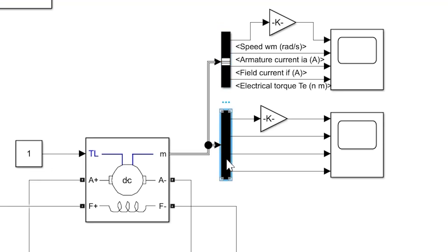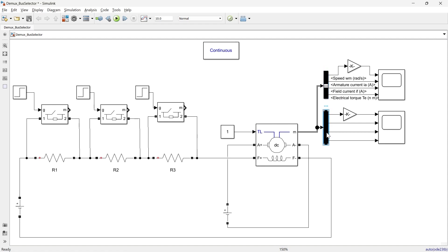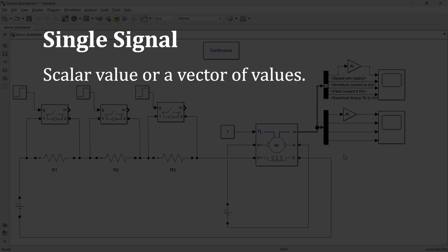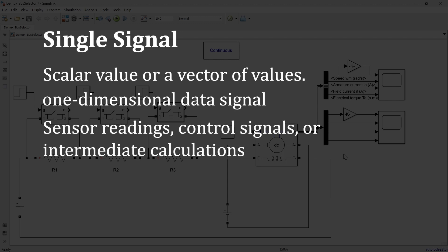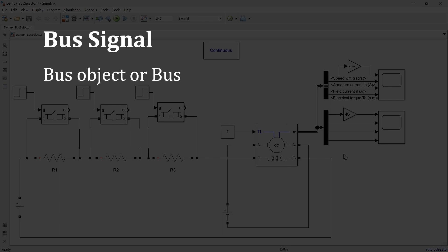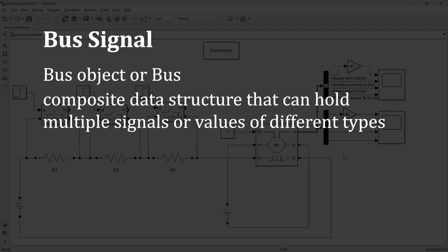The DMUX block accepts a single signal or a bus signal — here we are giving it a composite or bus signal. Whereas the bus selector accepts bus signals only; it requires multiple signals as input. A single signal in Simulink represents a scalar or vector value — it is simply one-dimensional data that carries a single value or sequence of values over time, often used for sensor readings or control signals. A bus signal, on the other hand, is a composite data structure that can hold multiple signals of different types.